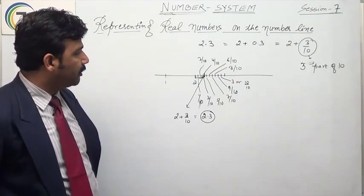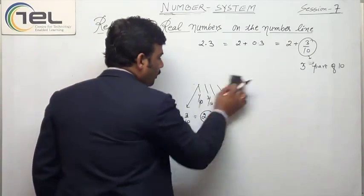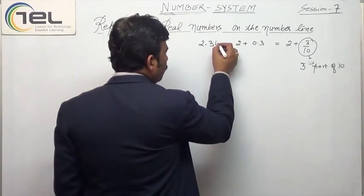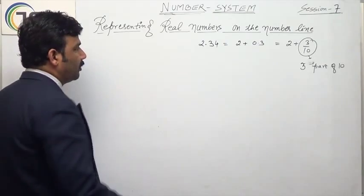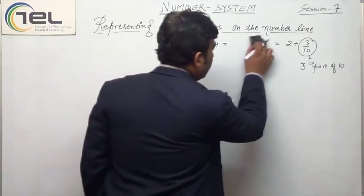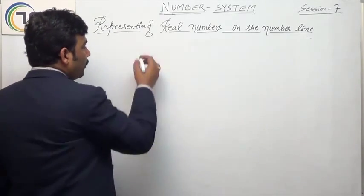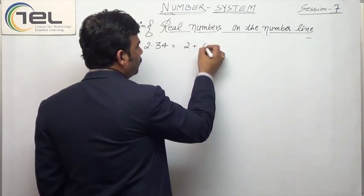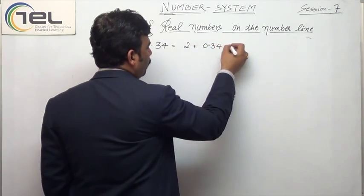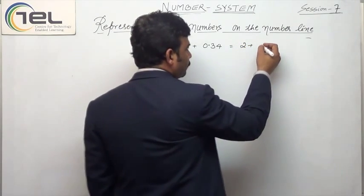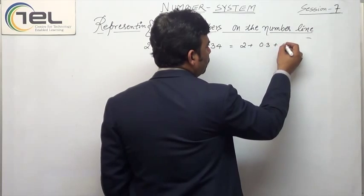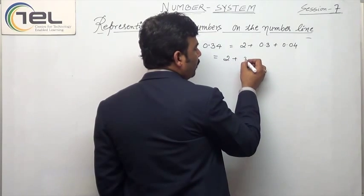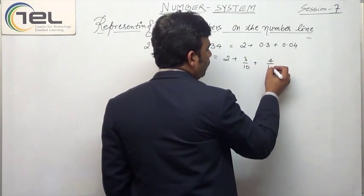Similarly, if I have to represent another number — 2.34 — it is like that. So 2.34 is nothing but 2 plus 0.34, or I can write 2 plus 0.3 plus 0.04, or I can say 2 plus 3 by 10 plus 4 by 100.